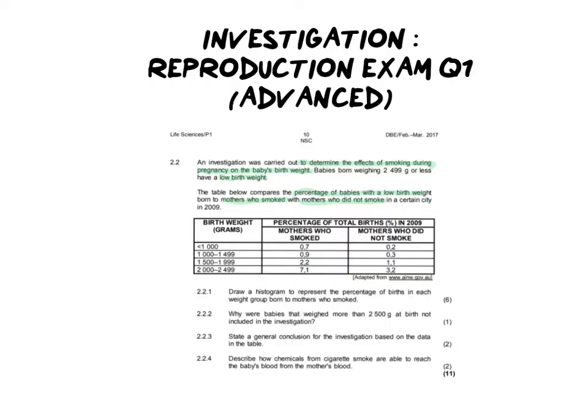The table compares the percentage of babies with a low birth weight born to mothers who smoked versus mothers who did not smoke in a certain city in 2009. We've got birth weight, percentage total of births, and then mothers who smoked versus mothers who did not smoke. If you look comparatively between the two columns, mothers who smoked had a higher percentage of children in each of the lower birth weight categories — in other words, more babies with lower birth weights. There's a clear correlation between the two.